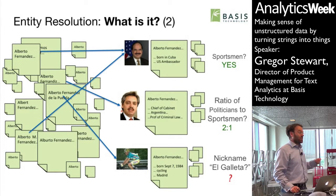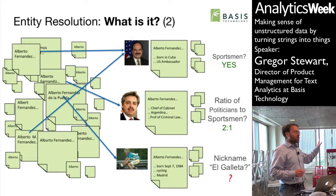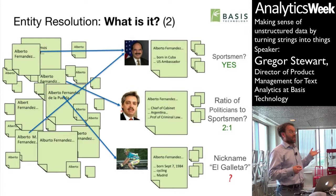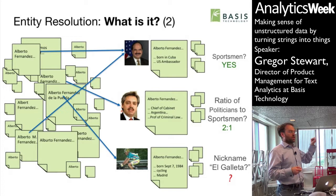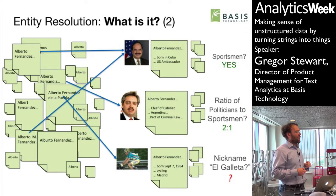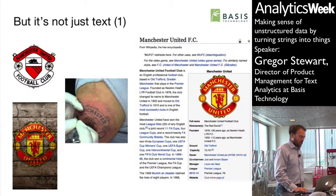You can use context to point to the right Alberto Fernandez and use the information in the knowledge source you resolve to. You can answer questions like: are any of the people mentioned as Alberto Fernandez a sportsman? What's the ratio of politicians to sportsmen? More complicated questions like, does any of them have the nickname El Galeta? It turns out the cyclist's father was also a cyclist and that was his dad's nickname, not his.